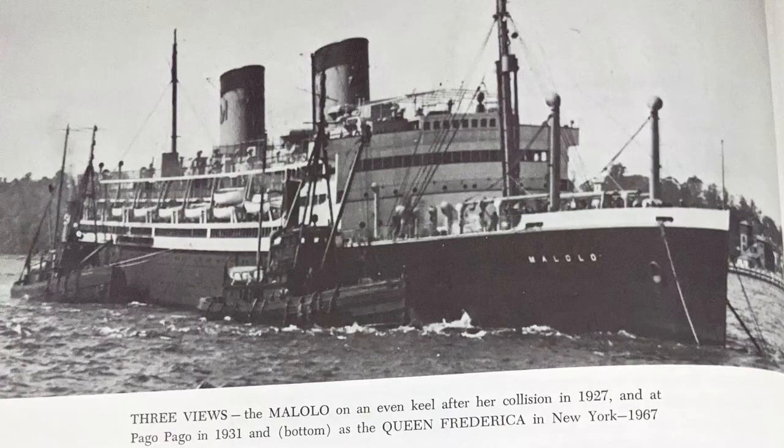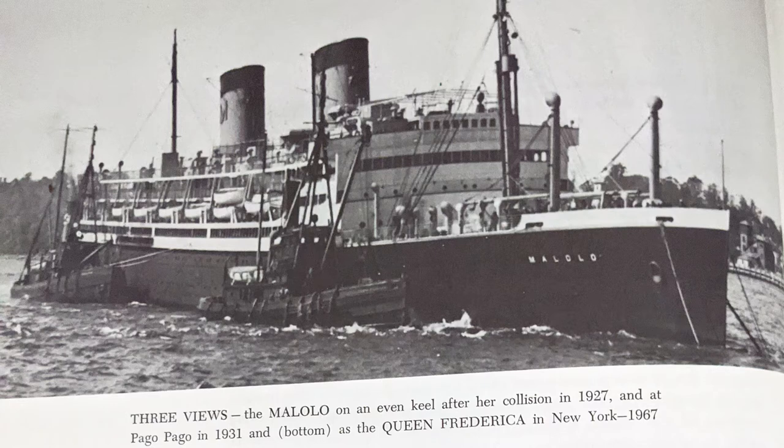The first liner design that he was able to create from the keel up was the Mattson liner Malaloe, which coincidentally demonstrated the benefits of Gibbs' uncompromising approach to safety. As that ship was completing its final sea trials, it was struck by the Norwegian freighter Jacob Christensen, creating a large gash under the bridge on the port side. Even though 7,000 tons of water filled the ship, the watertight bulkheads did their job perfectly, and with only a five-degree trim to the bow, the Malaloe was safely towed back into harbour.